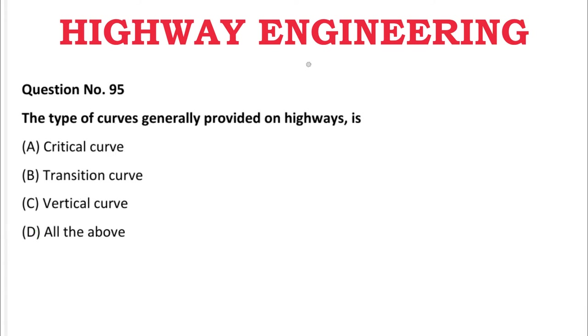Next question: The type of curves generally provided in a highway is — A: critical curve, B: transition curve, C: vertical curve, D: all the above. The correct answer is D, all the above.